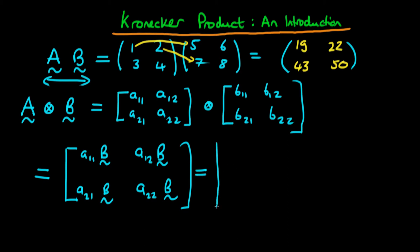If we write this out in long form, the first component would be A11 times B11, the second component would be A11 times B12, the third component would be A11 times B21, and then we would have A11 times B22.